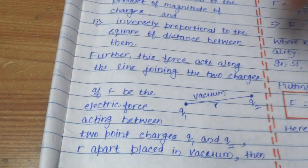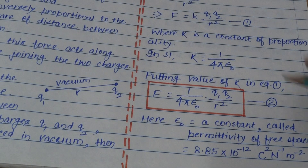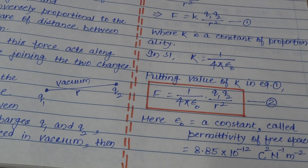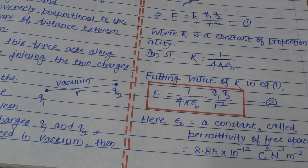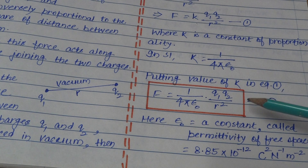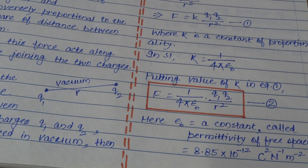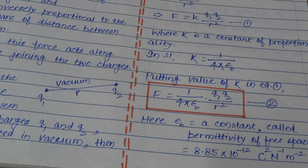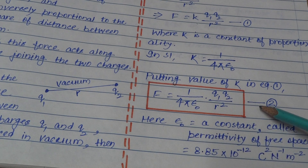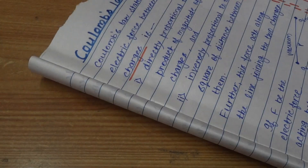It is very important to keep in mind that the formula in Equation 2 for calculating the magnitude of electric force is applicable only when the charges are placed in vacuum, free space, or air. If the medium between the charges is something other than vacuum, free space, or air, we cannot use this equation to calculate the magnitude of the electric force.